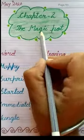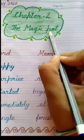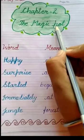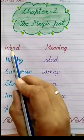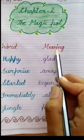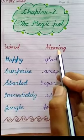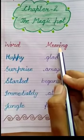Then you have to write the chapter number and the chapter name: The Magic Pot. So let's start with the word meanings. Your first topic is word meanings, and you have to write it the same as I've written.